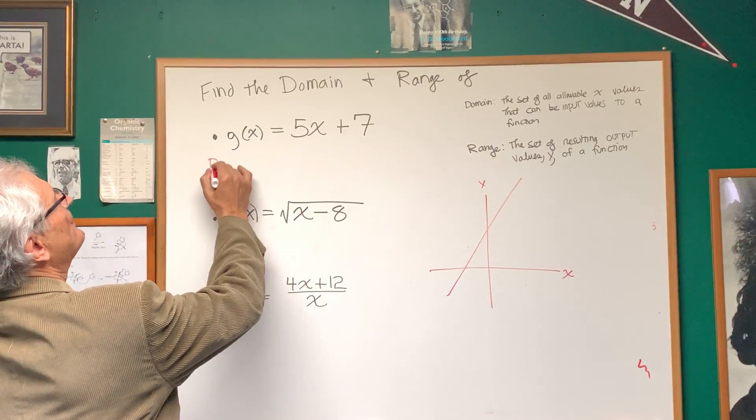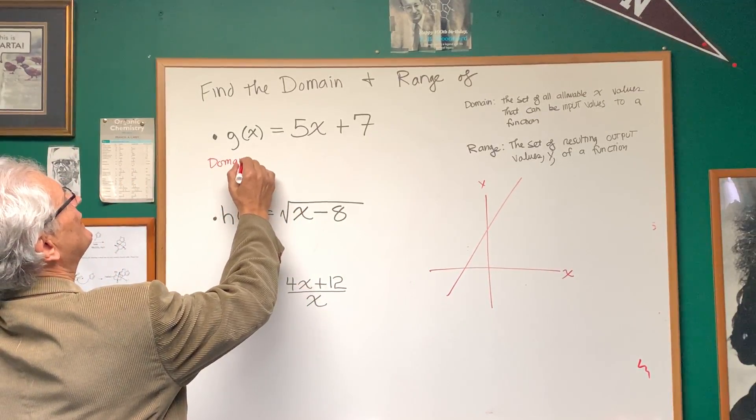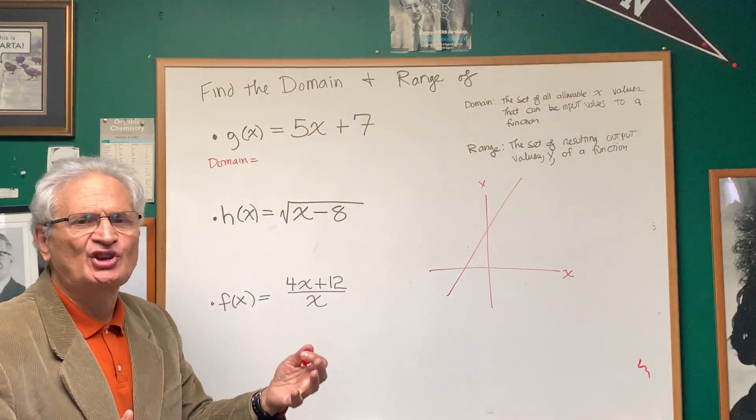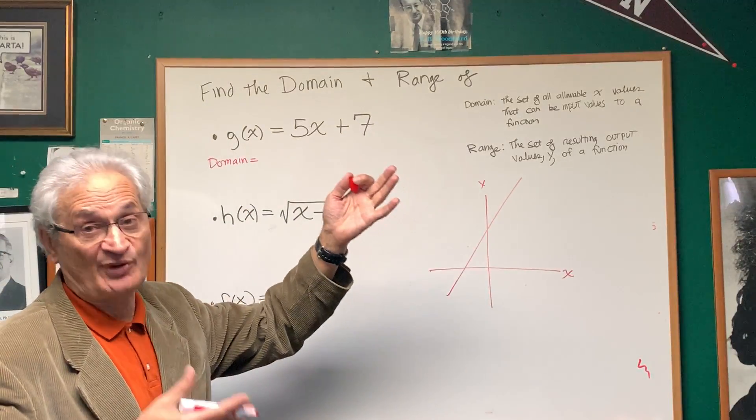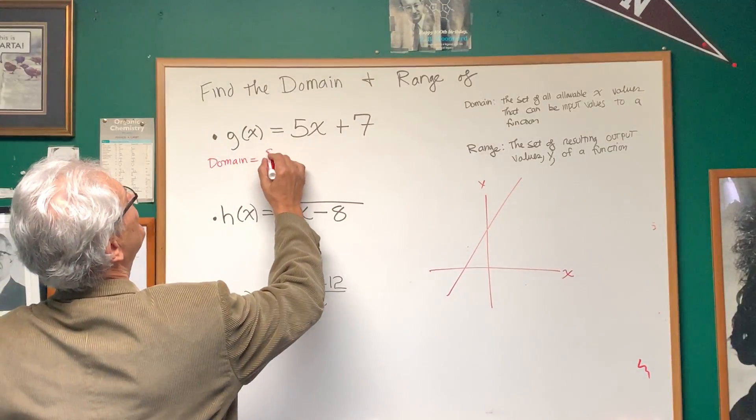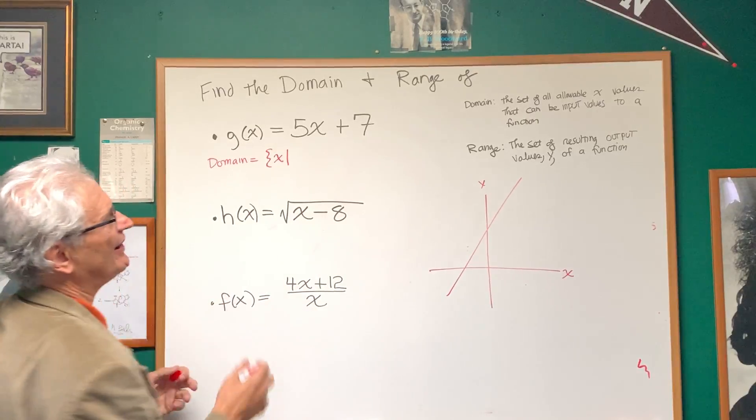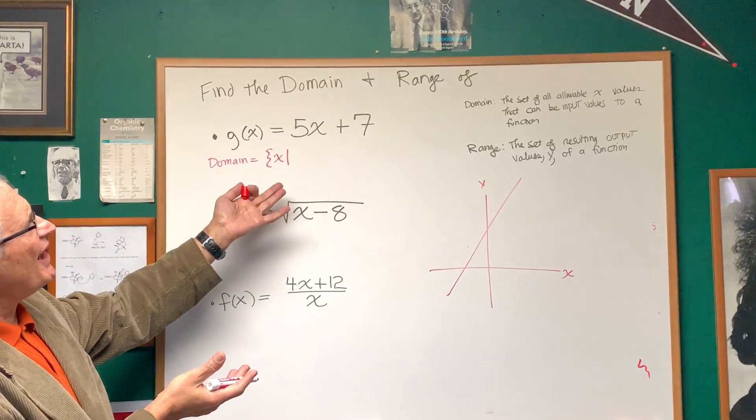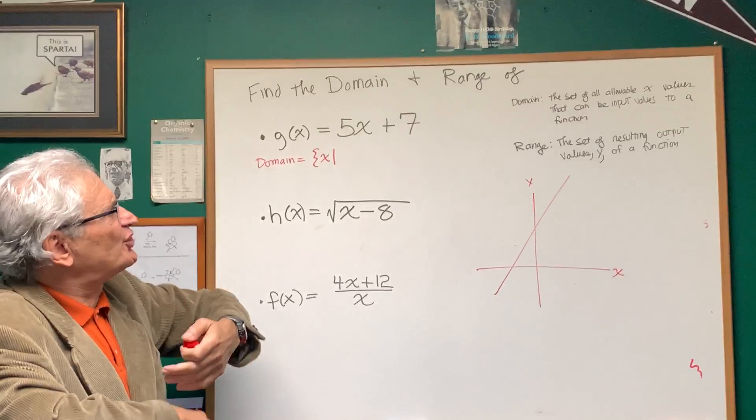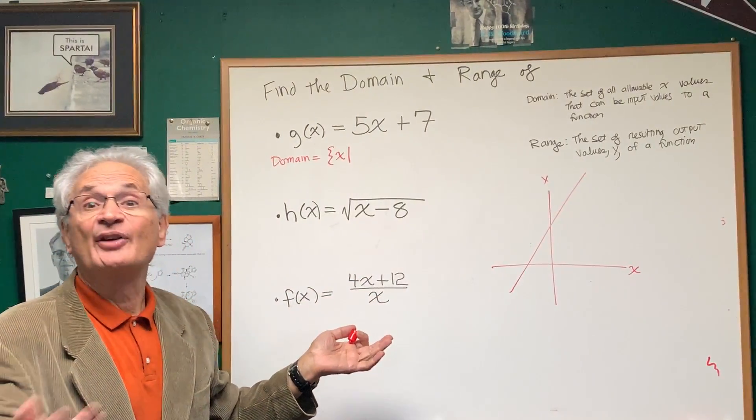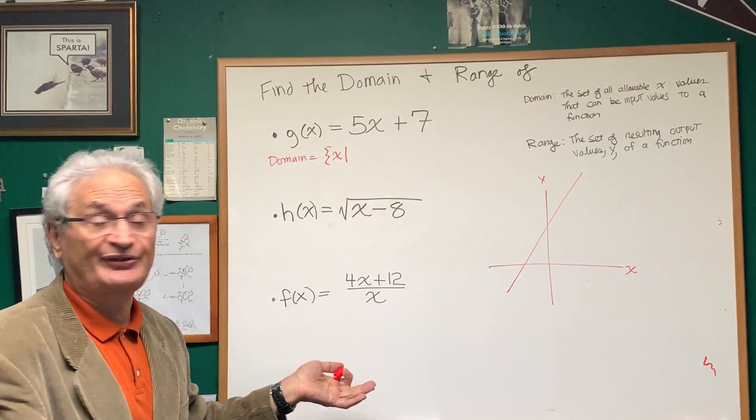And the domain, the domain is going to be, and we express the domain in set notation because it represents a set of numbers, the set of x such that, well, what are the restrictions on x here? If there's no otherwise stated restrictions, x could be any number whatsoever, from negative infinity to positive infinity.